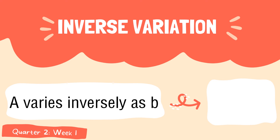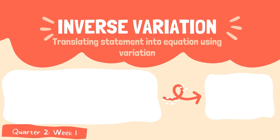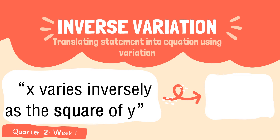We have here: a varies inversely as b. Writing this statement into an equation gives a is equal to k over b. Another example: the number of slices S that can be made from a standard Pinoy loaf of bread is inversely proportional to the thickness T of a slice, written as S is equal to k over T. Another one: x varies inversely as the square of y, written as x is equal to k over y squared.